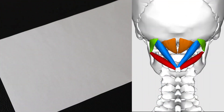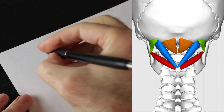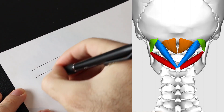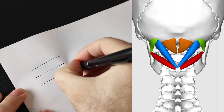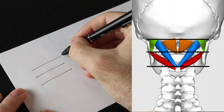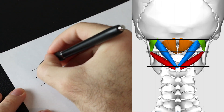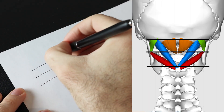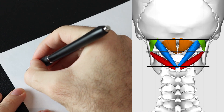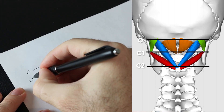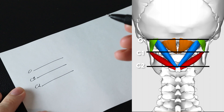For a little study strategy, get a piece of paper and a pen, and to start off with, draw three lines. These lines represent the three levels that these muscles are found on. The most superior line represents the most superior attachment point, which is the occiput. Then we have C1 in the middle and then C2.